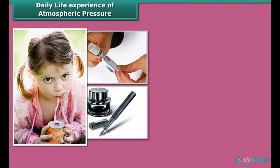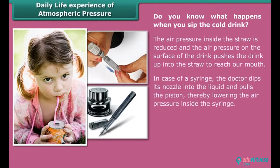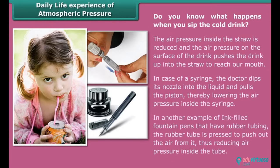Daily life experience of atmospheric pressure. In our day-to-day activities we experience various instances of atmospheric pressure. Some common examples are sipping cold drink through a straw, dipping the nozzle of the syringe in the liquid, or filling of ink in fountain pens. Do you know what happens when you sip the cold drink? The air pressure inside the straw is reduced and the air pressure on the surface of the drink pushes the drink up into the straw to reach our mouth. In case of a syringe, the doctor dips its nozzle into the liquid and pulls the piston, thereby lowering the air pressure inside the syringe. Another example of ink-filled fountain pens that have rubber tubing. The rubber tube is pressed to push out the air from it, thus reducing air pressure inside the tube.